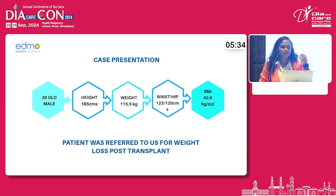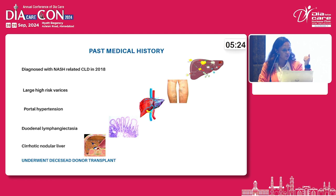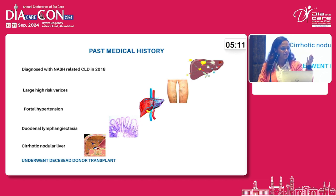Our patient was a 30-year-old female with a BMI of 42.6 and high waist circumference, referred to us for weight loss post transplant. The main reason for the transplant was a diagnosis of NASH with chronic liver disease in 2018, presenting with large high-risk varices, portal hypertension, and cirrhotic nodular liver.